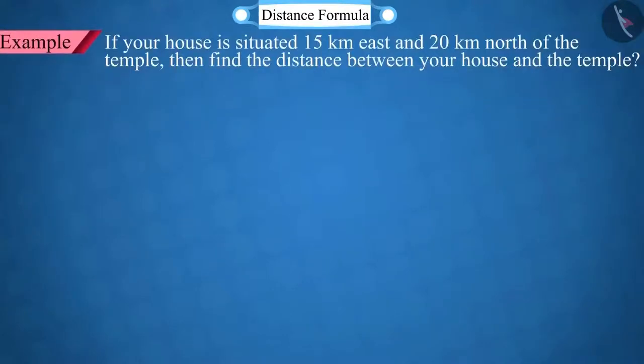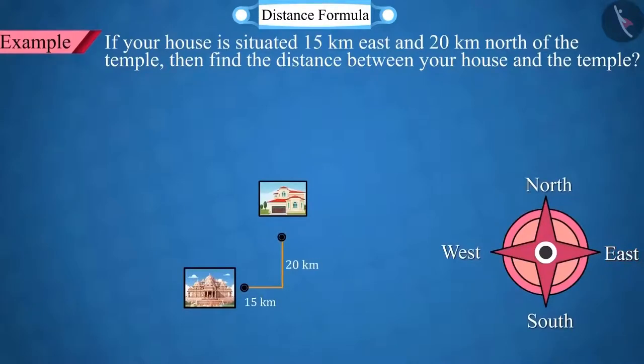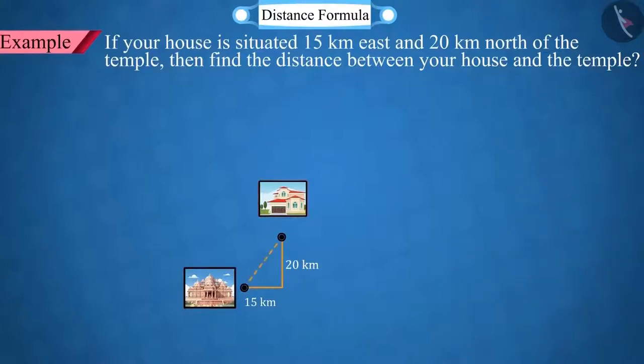If you are told that your house is located 15 kilometers east and 20 kilometers north from the temple, then can you find the distance from the temple to the house?